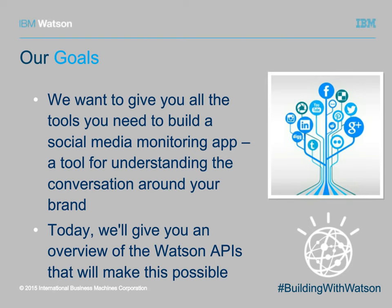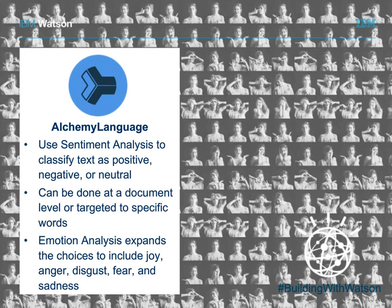Today we're going to look at the services that go into making the app. The first service is Alchemy Language, which is actually a suite of natural language processing tools that can help you understand your text. This text could be anything from Twitter feeds, web pages, or news articles. That insight includes things such as keyword extraction, where we can tell what words are mentioned frequently or prominently. We can also do entity extraction to detect if things such as companies or people are mentioned.